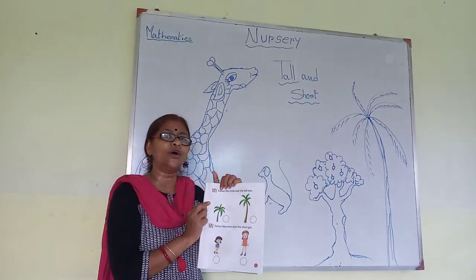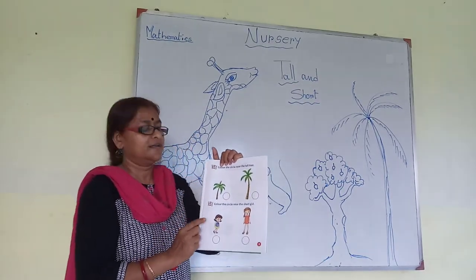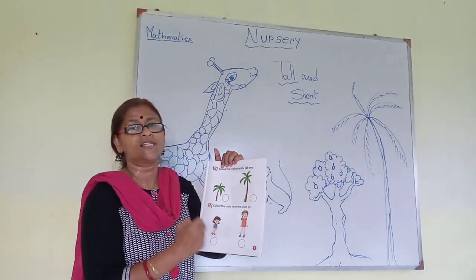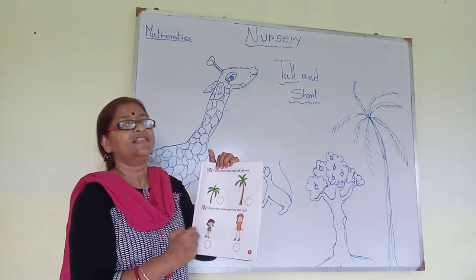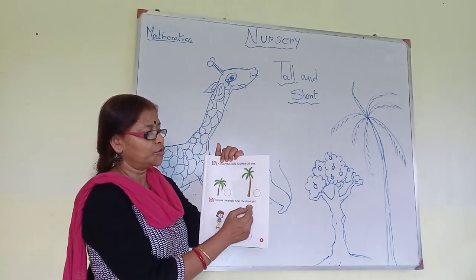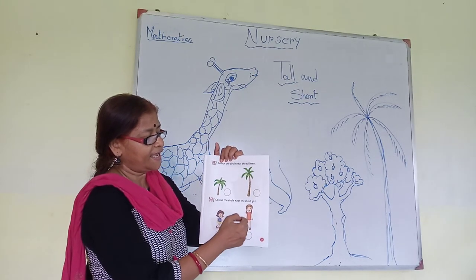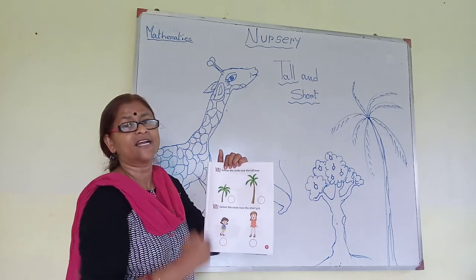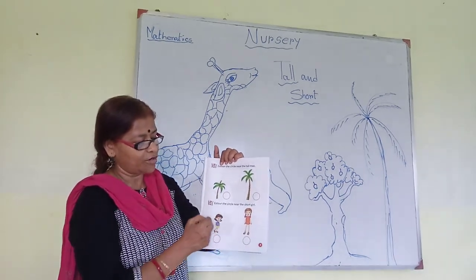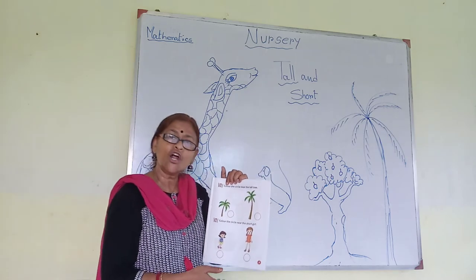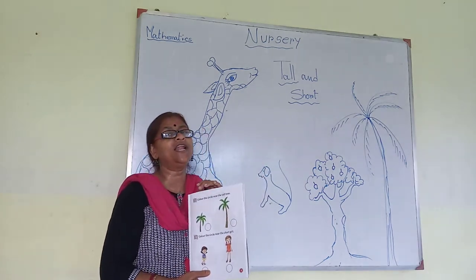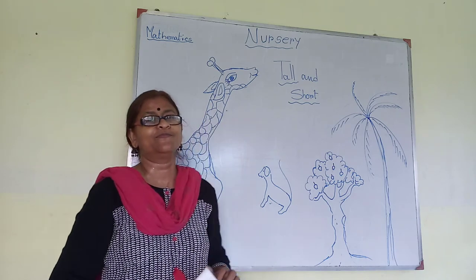If I instruct you: circle the tall girl and cross out the short girl, then what will we do? We will put this girl inside the circle and we will cross out the short girl. Understood? Everybody may practice it at your home. Bye.